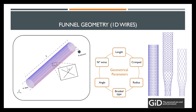In order to understand the application, we need to know the different parameters that influence the braided geometry — for instance, stent length and diameter, the number of wires, the braiding angle, etc.